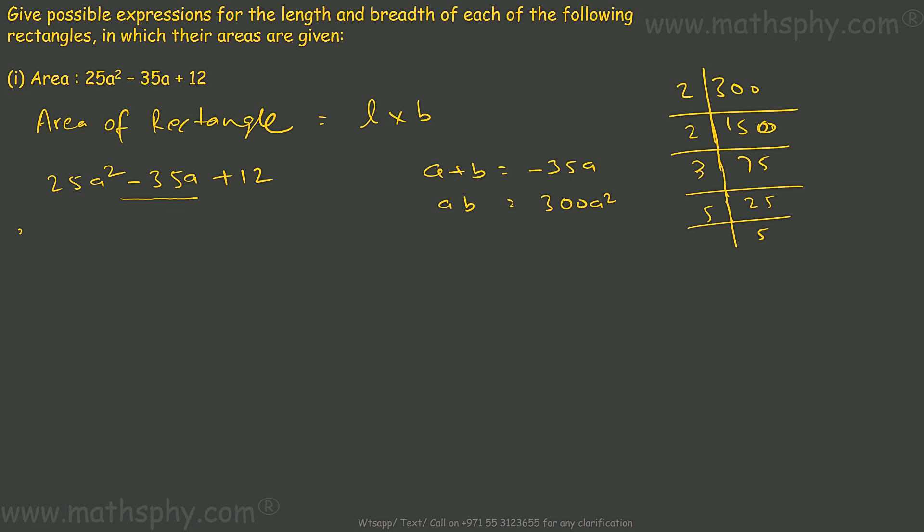When I factorize this, this comes to 2 into 2, 3 into 5 into 5. So it can be 20 into 15: 2 into 2 is 4, into 5 is 20, 3 into 5 is 15.